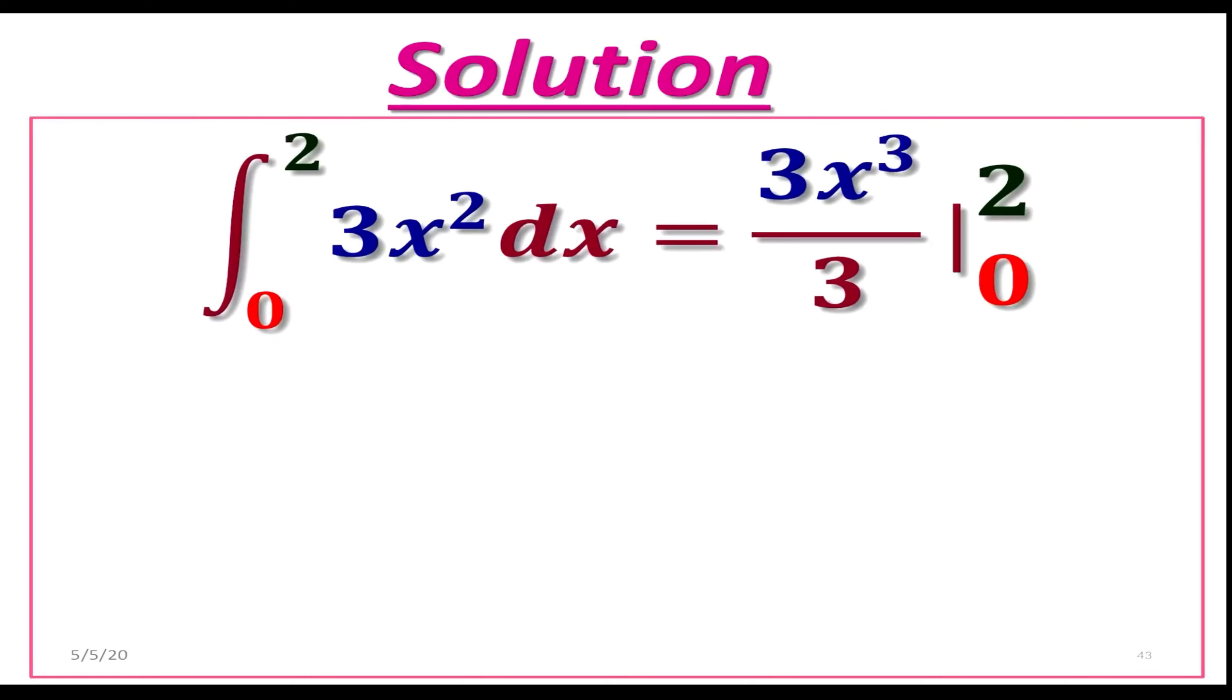You want to keep this three, and by the power rule for integration, you will get x cubed over three. Now, no c at the end. Instead of this, we are going to draw a vertical bar, and we are going to place the limit. Zero goes on bottom, and two goes on top.